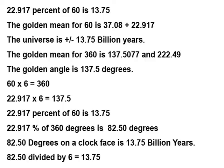The golden mean for 360 is 137.5077 and 222.49. The golden angle is 137.5 degrees. 60 times 6 equals 360. 22.917 times 6 equals 137.5. 22.917% of 60 is 13.75.